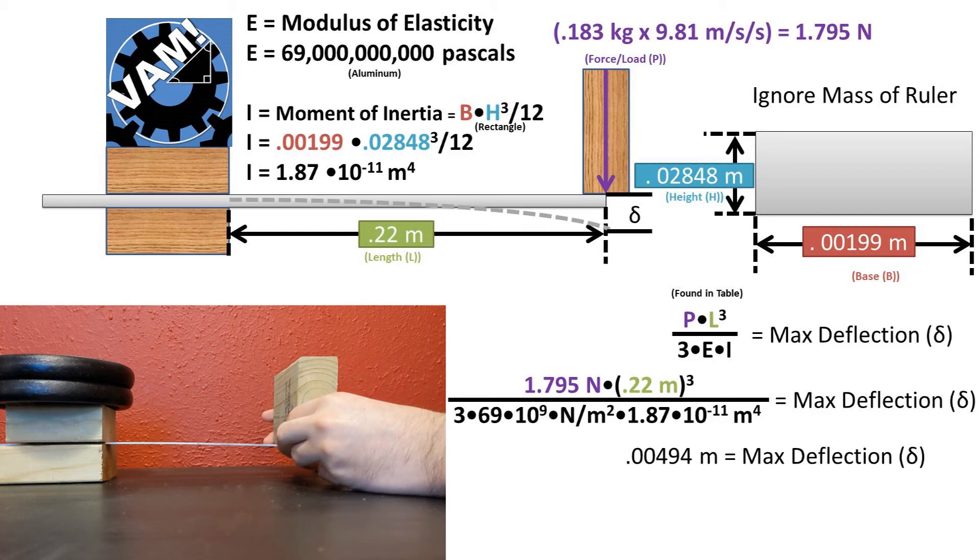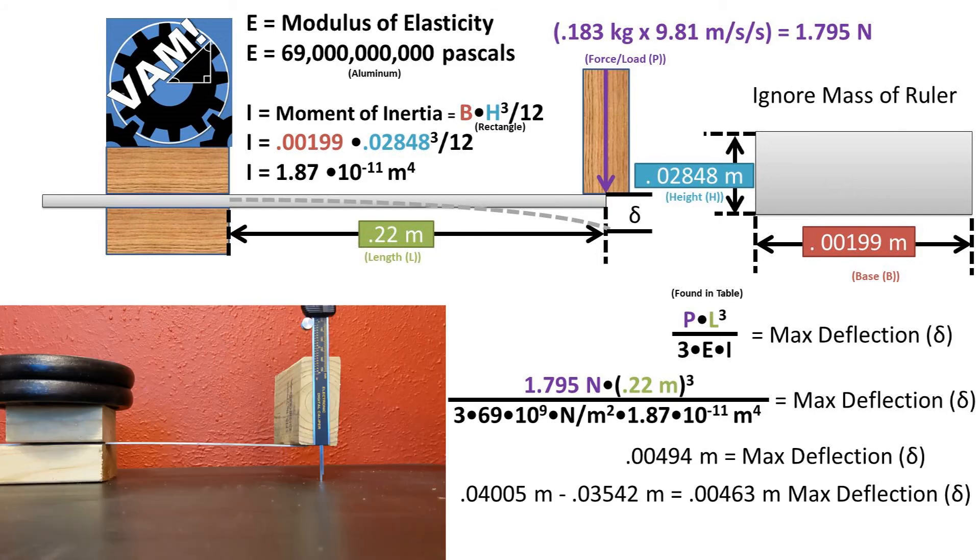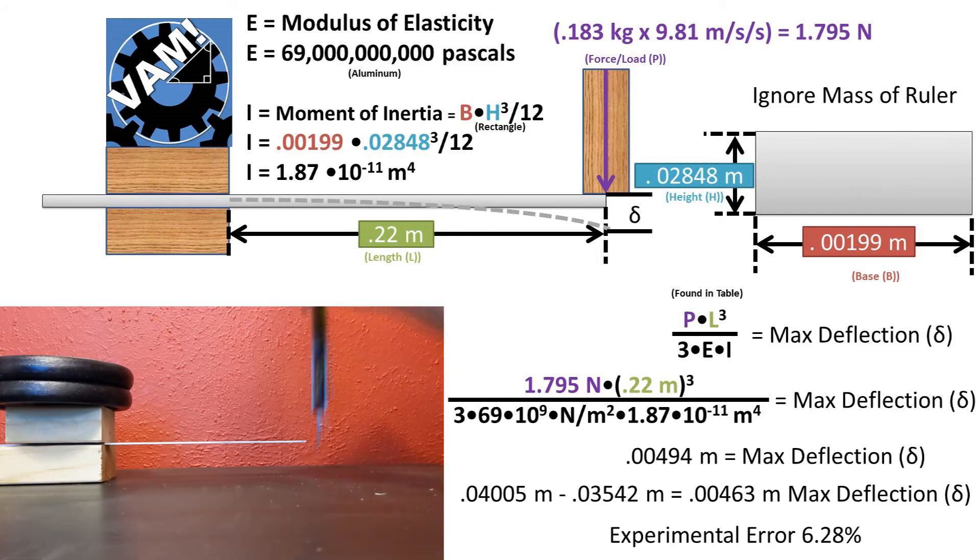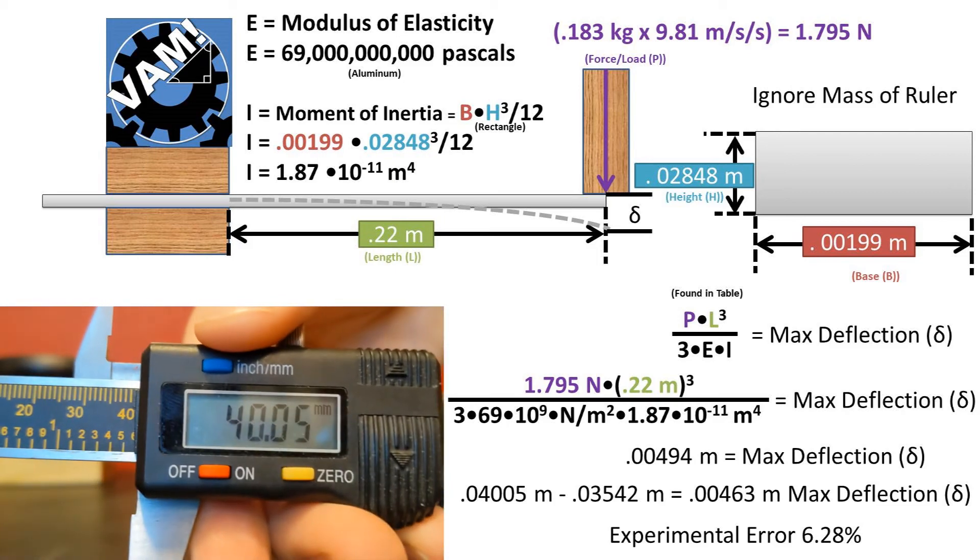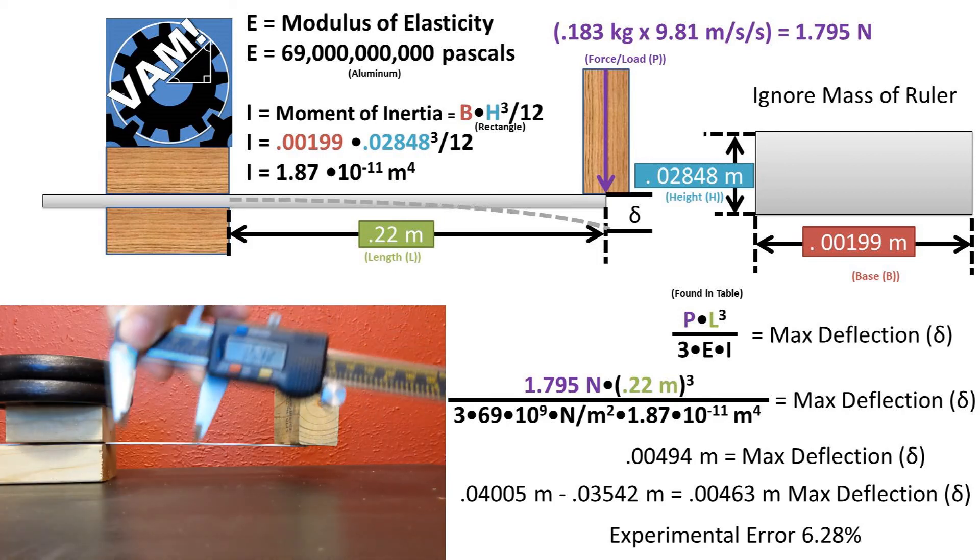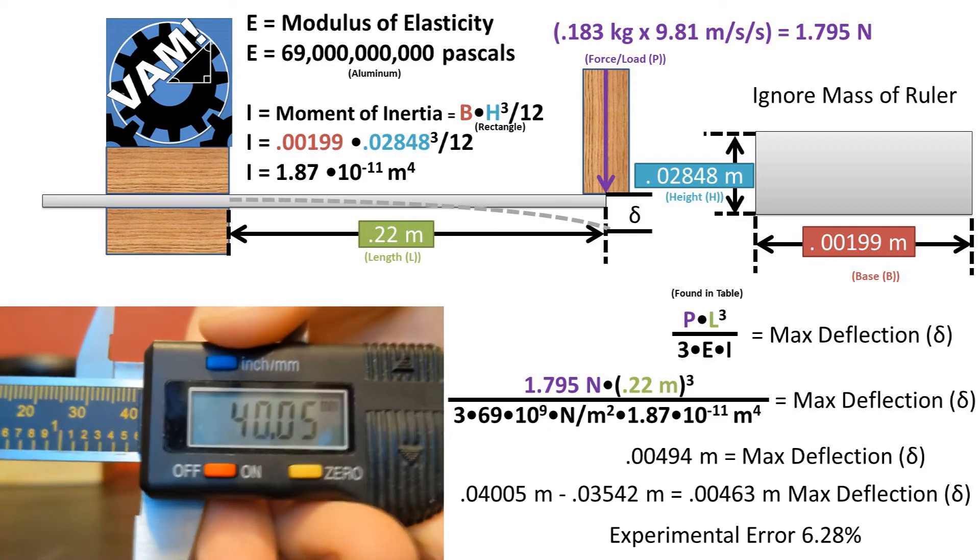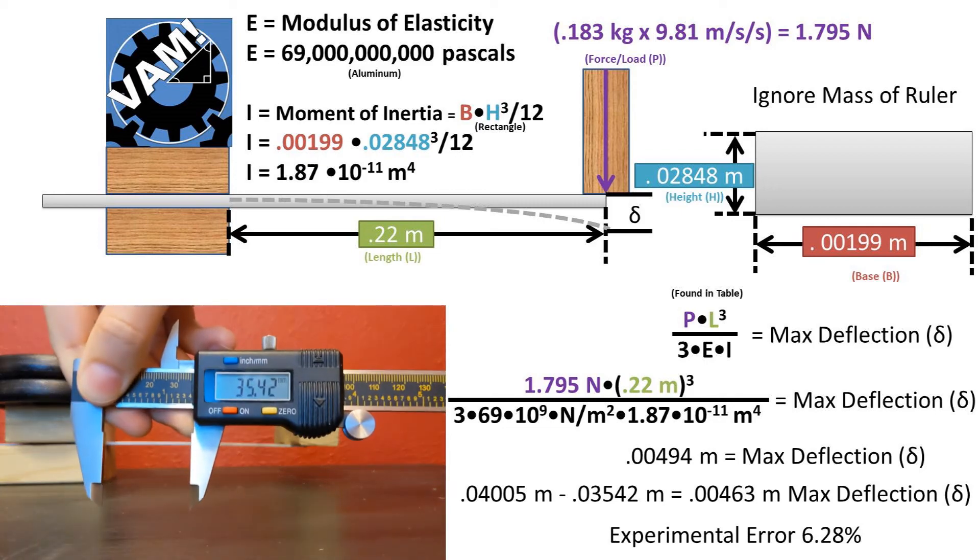Now let's see how this compares to our experimental values. I took a measurement before the block was on the beam, and a measurement after the block was on the beam. Taking the difference of these two values, we get a max experimental deflection of 4.63 millimeters, which leaves us with an experimental error of 6.28%.